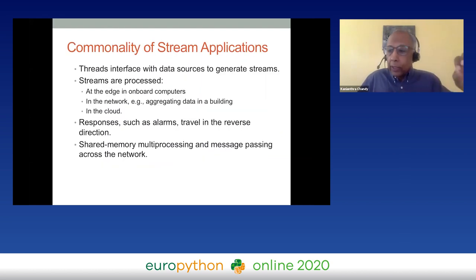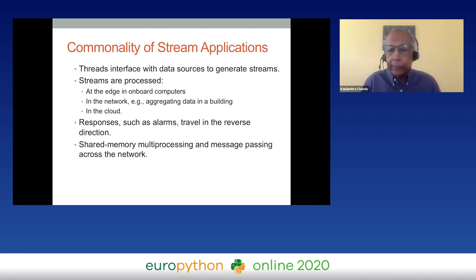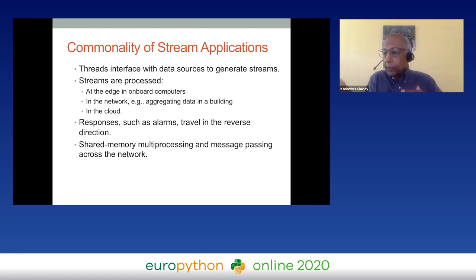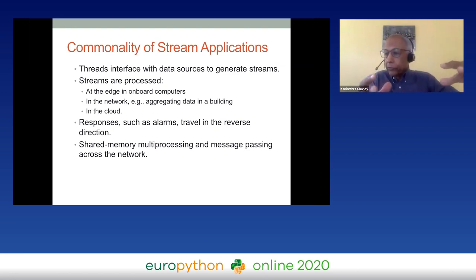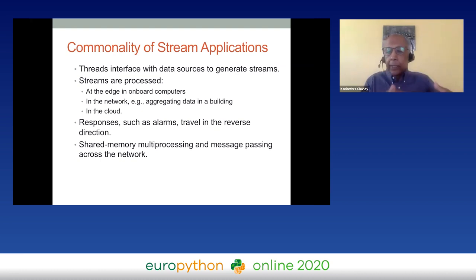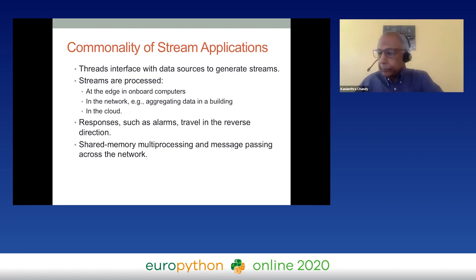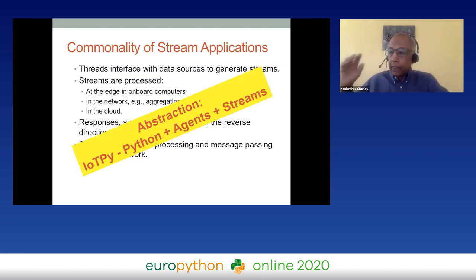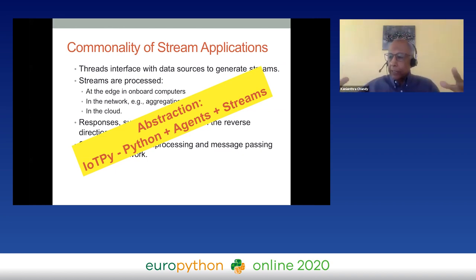All stream applications have aspects in common. They have threads that interface with data sources or actuators. Streams are processed right where they're generated — on onboard computers, in shared memory, and in the cloud. All these applications acquire and process streams. IoTPy creates a common abstraction across this variety of stream applications.